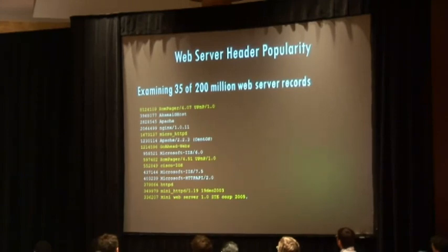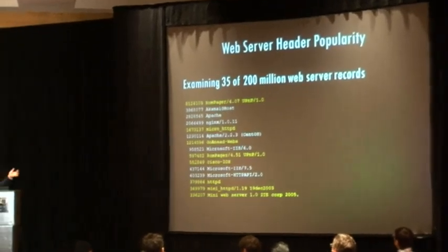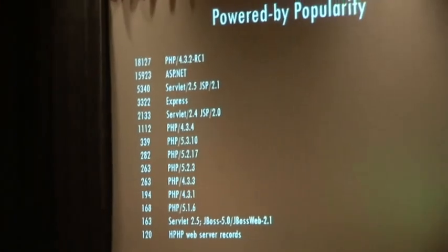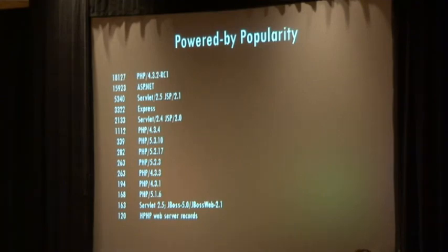Looking at web server user-agents across about 35 million servers in the initial dataset: there are 8.1 million ROM pager web servers — all those embedded devices. Then Akamai, Apache, Nginx, and others. Interestingly, there are actually more embedded web servers out there than real web servers in terms of what's exposed to the world. Looking at 'powered by' headers: tons of PHP of course, but PHP 4.3.2 RC1 is ancient and there are 18,000 servers out there announcing it — which means all those fun 16-bit reference counter vulnerabilities apply. The overall health of the internet based on banners alone: we're pretty screwed.